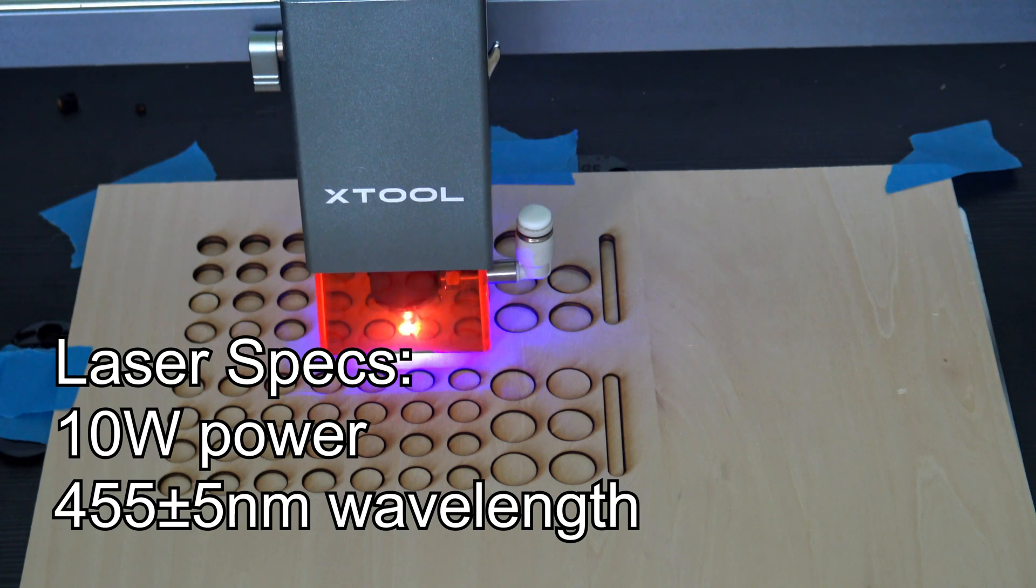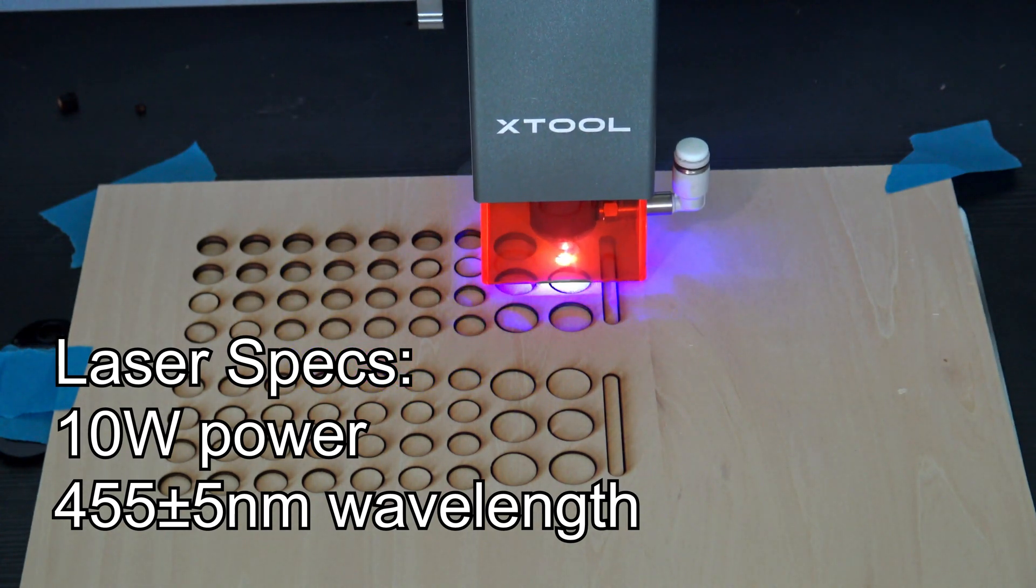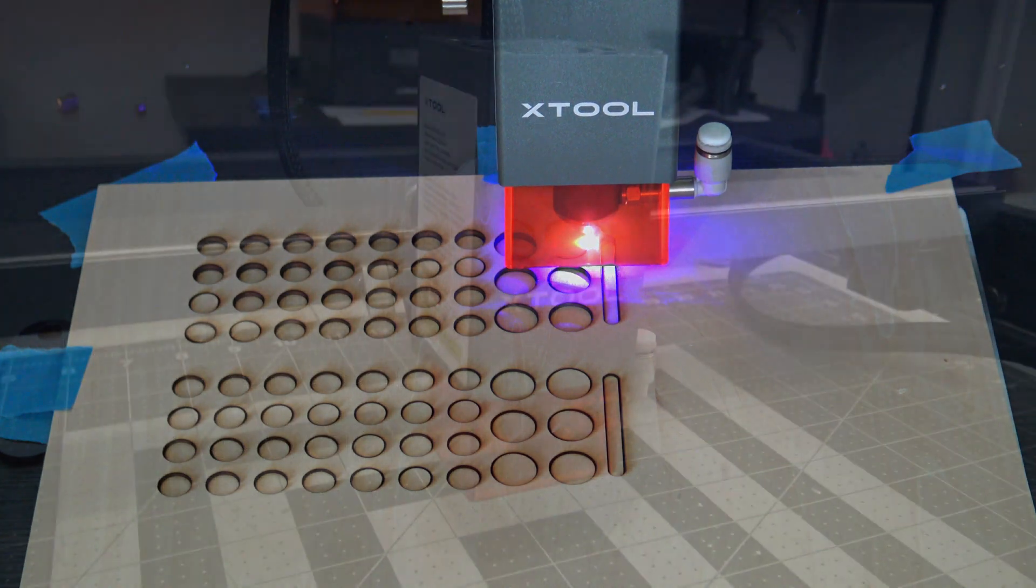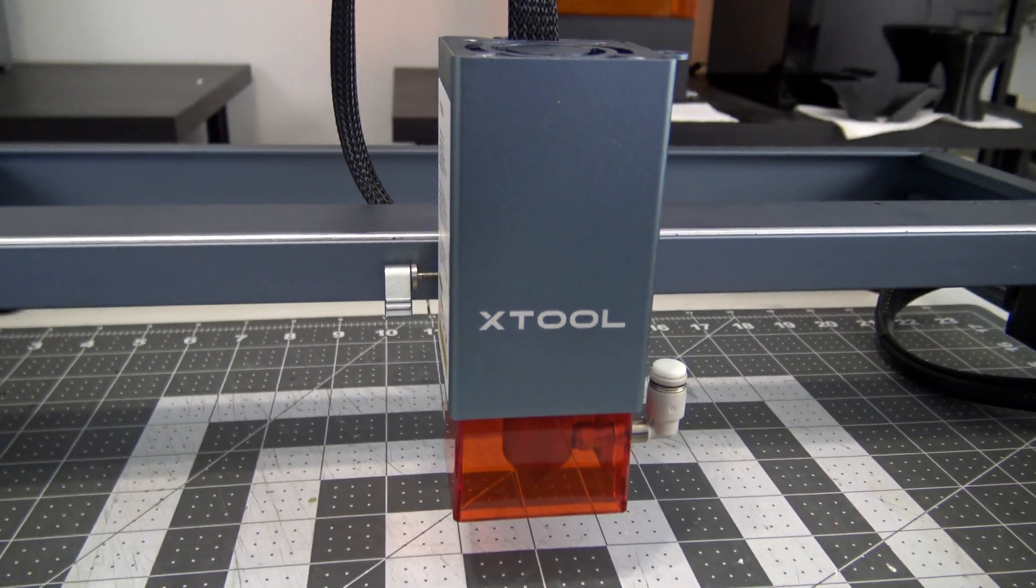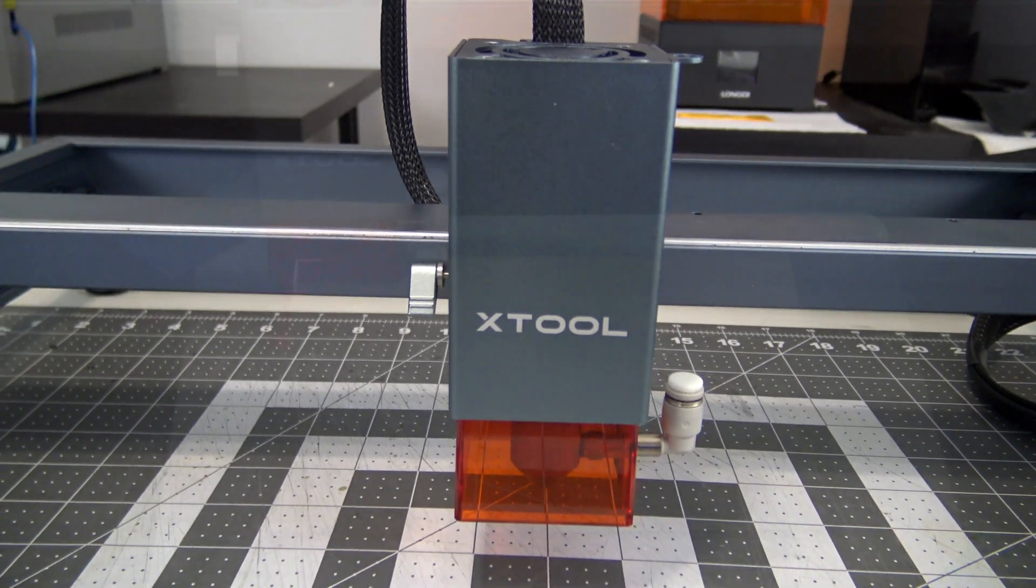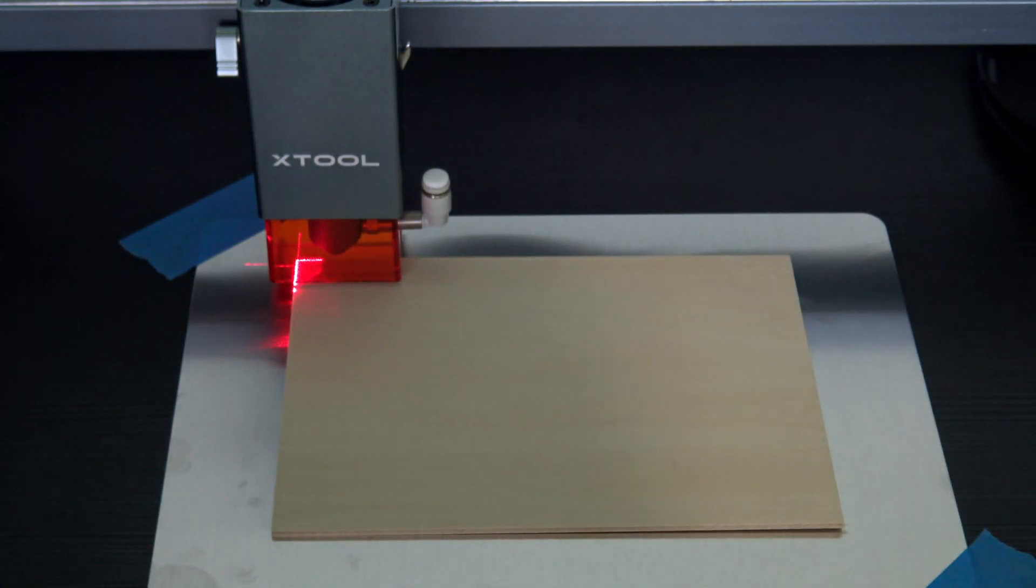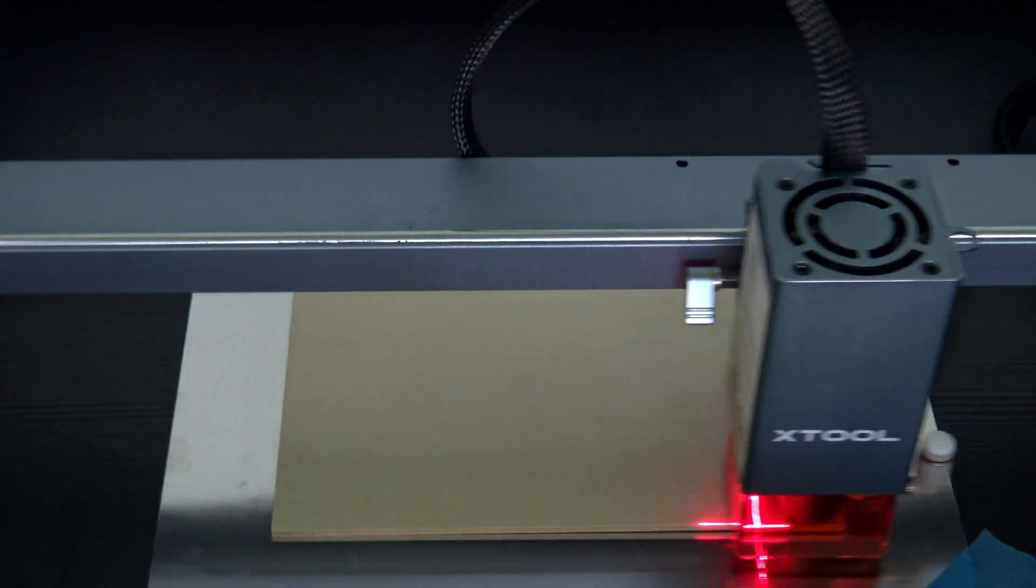The D1 Pro is a blue diode laser engraver, using visible blue lights of 455 nanometer wavelength. The laser module houses the two laser diodes, which use lenses to combine them together to form the final 10W output. The D1 Pro has a separate positioning light, which shines a red X to indicate where the laser will fire.